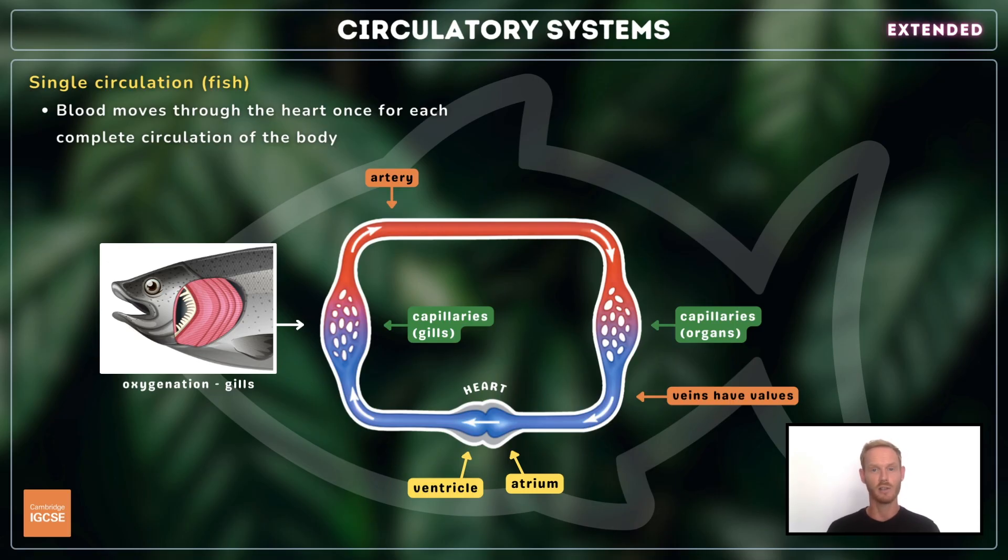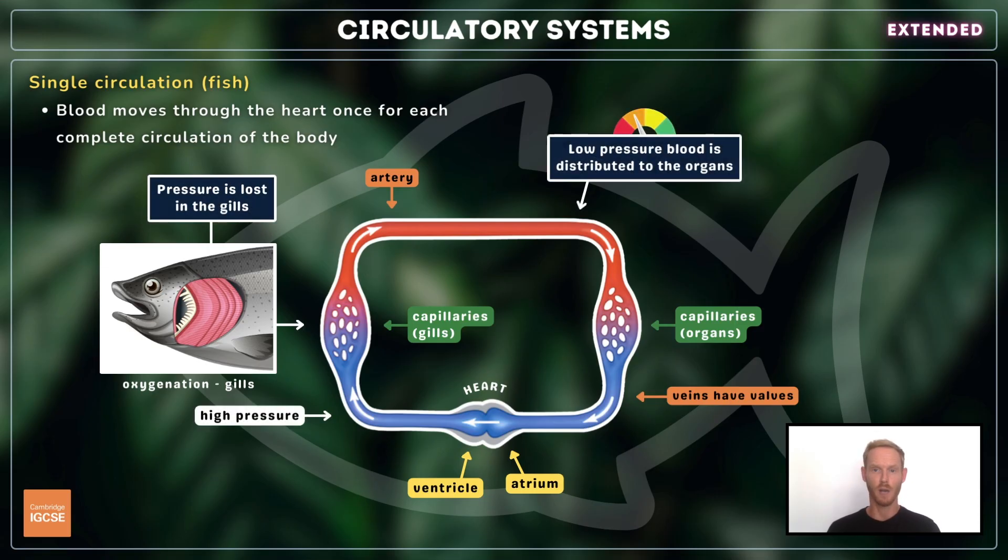Single circulation systems are relatively inefficient, as the blood loses pressure and slows down in the capillaries of the gills, but still needs to pass through all the other organs of the body before it returns to the heart and pressure is increased once again.